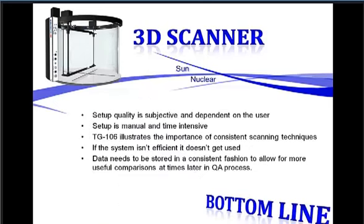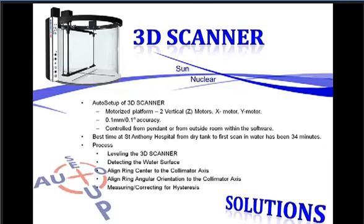It addressed the TG-106 consistency issues, as I'm sure we're all familiar with. The way it does it, eliminating the subjectivity of setup, is done through the auto setup functionality. I'll jump through a couple of these slides. The auto setup is a set of motorized platforms. It's got two vertical motors, an X and a Y motor. They quote 0.1 millimeter and 0.1 degree accuracy on the control of those motors and the alignment to the beam. We'll look at some scans where we've tested that during our commissioning. It's controlled either from a pendant on the tank or from a set of software routines and the auto setup functionality of the software, which you'll also see when we jump into the software. It levels the tank, detects the water surface, aligns to the center of the collimator axis, aligns the angular orientation to the field offset, and then corrects for any hysteresis in the scanning direction of the detector drive.